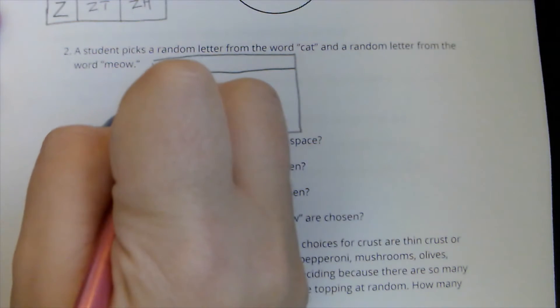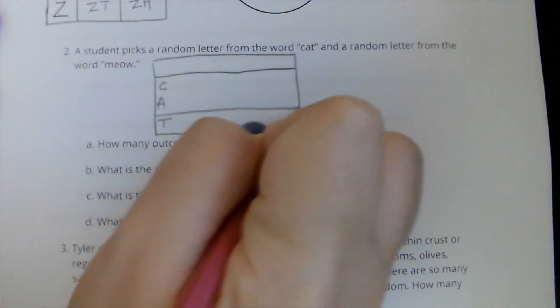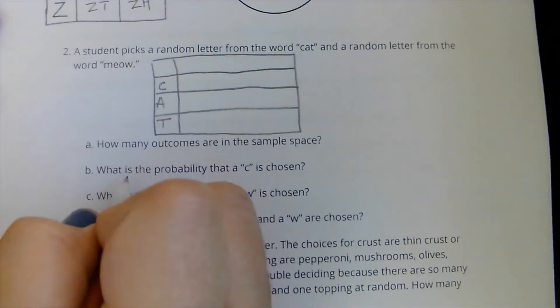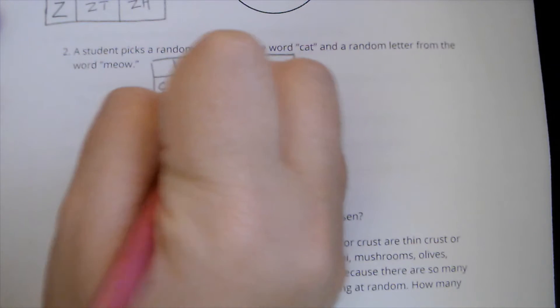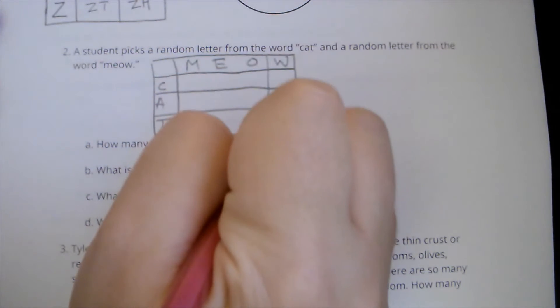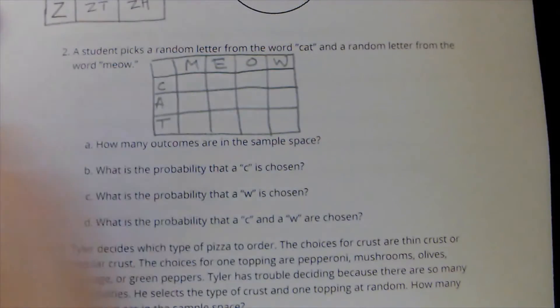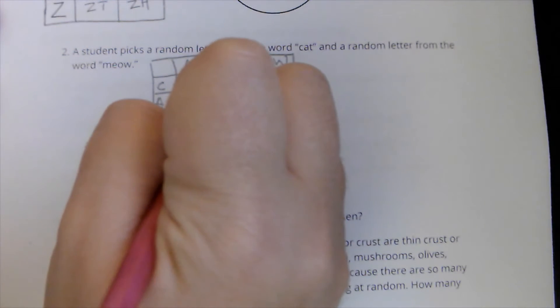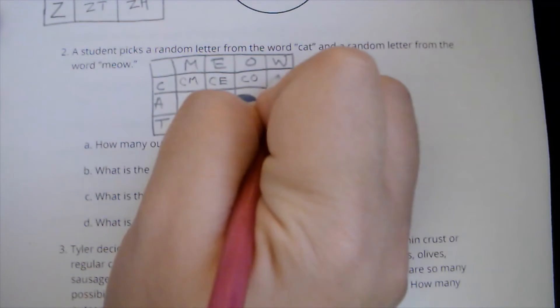Again, I'm going to leave the first row blank. And I'm going to do C, A, T for each of those options, make a row for each one. And then I've got to fit meow on the top, M, E, O, W, each one getting their own column. And so I could get a C from cat and an M from meow, or a C from cat and an E from meow, or a C from cat and an O from meow, or a C from cat and a W from meow.